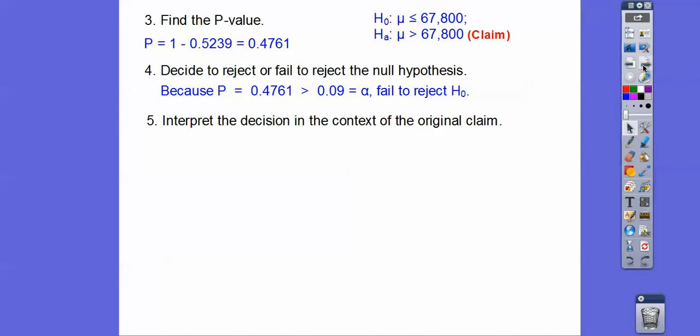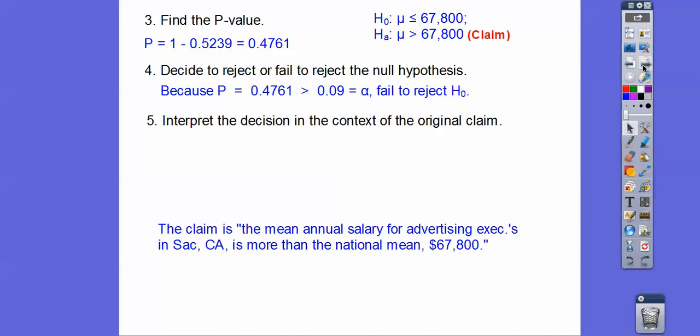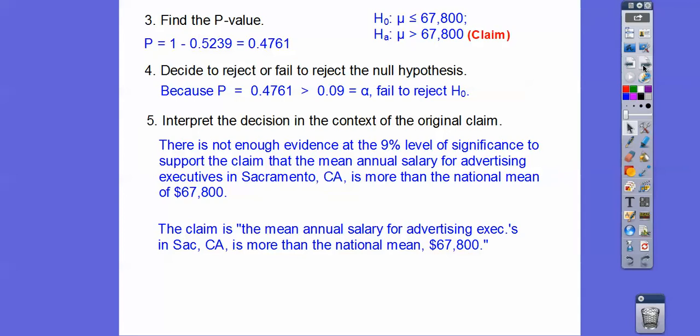So let's go ahead and interpret our decision in the context of the problem. The claim is that the mean annual salary for advertising in Sacramento is more than the national mean. There's not enough evidence — at the 9% level, or even the 45% level — to support it. There's not enough evidence at the 9% level of significance to support the claim that the mean annual salary for advertising executives in Sacramento is more than the national mean of $67,800. Make sure you state that in the context of the problem.